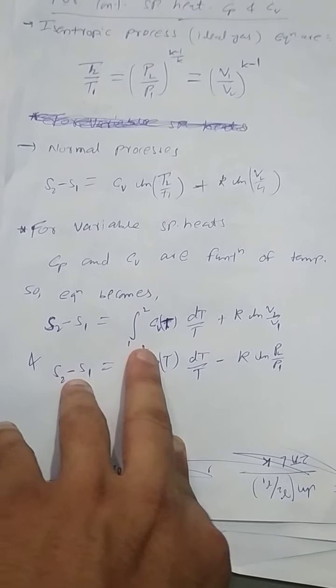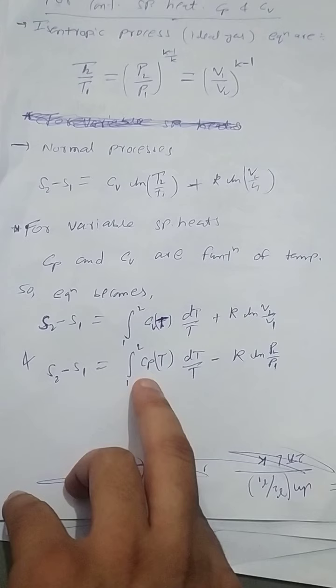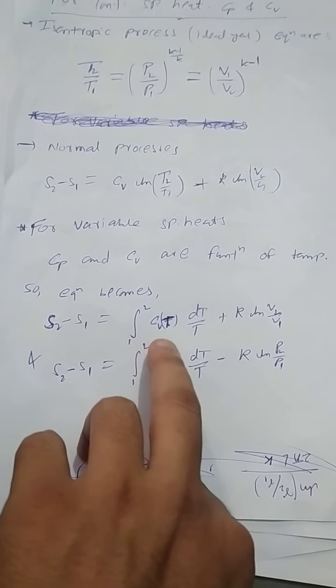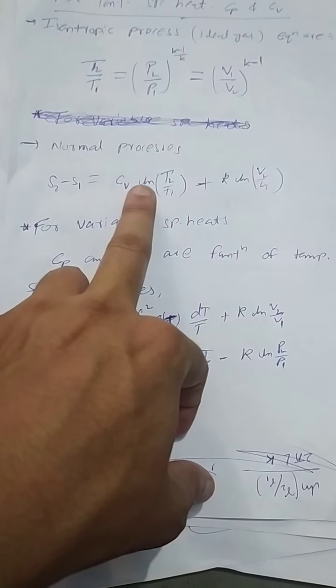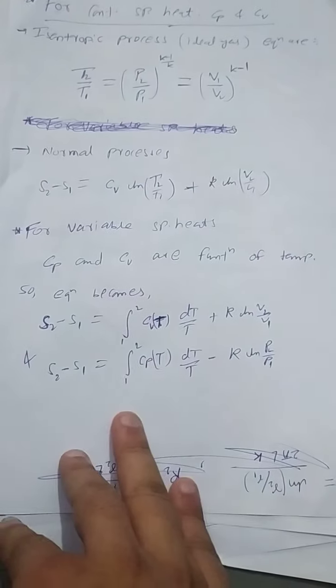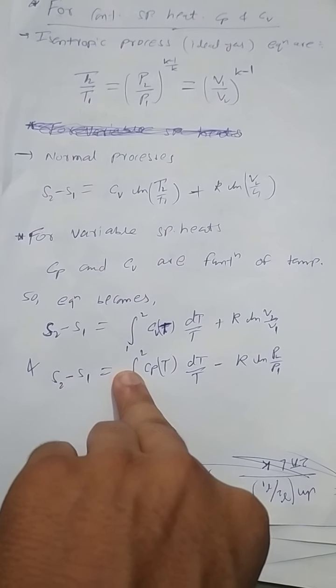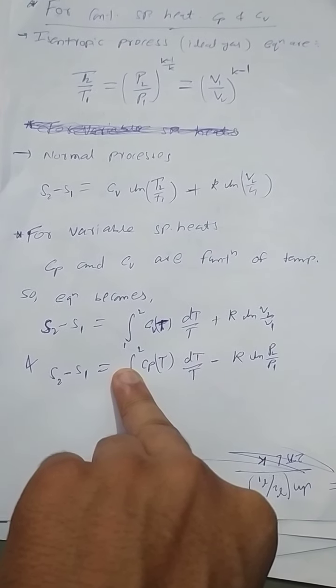If you can see from here, if cv and cp are constant, these equations would look similar to this. But in this case they are not constant, so to calculate the entropy we must know the function value.